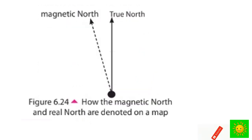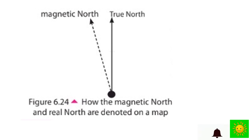There is a little difference between the real north and magnetic north of the Earth. The magnetic north lies a few degrees northwest from the real north. This is how the magnetic north and real north are denoted on a map.